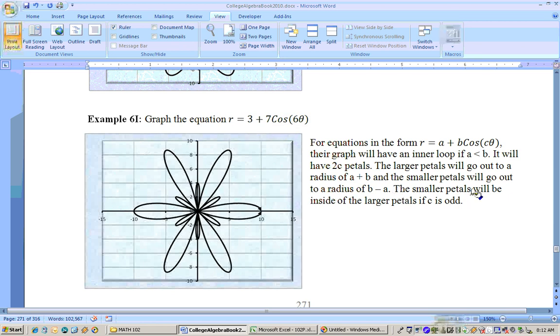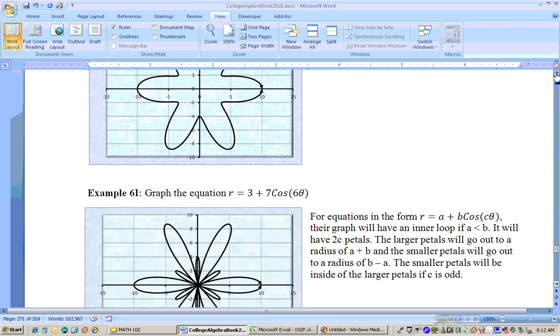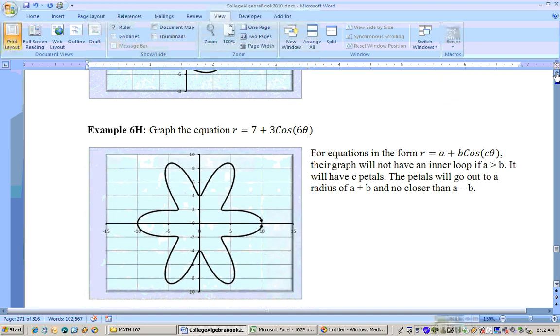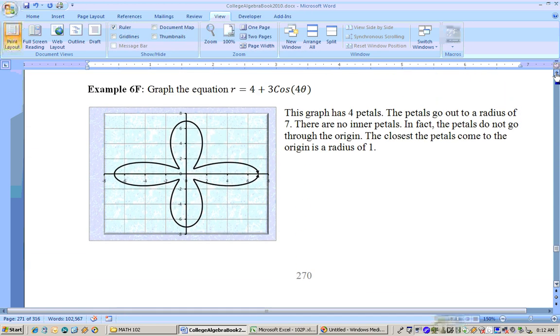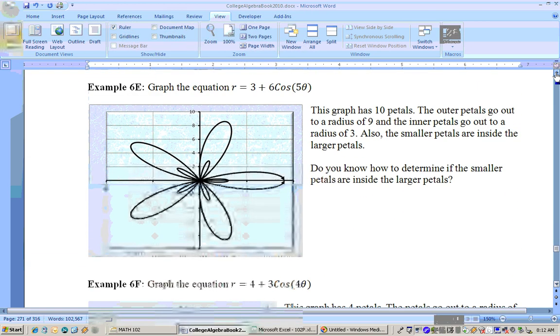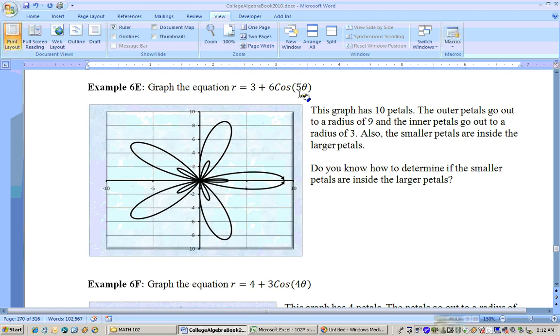The smaller petals will be inside the larger petals if C is odd. Well, C is even in this one, and that's why it's not inside of the larger petals. If we go up here, let's find one where it is inside. I think that was the one we just did a second ago here. See, the C was odd, so these petals are going to be inside of these petals. The C is odd, so that's why they're inside of the other ones.